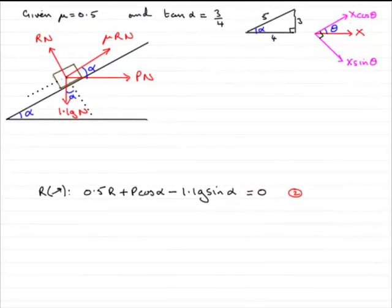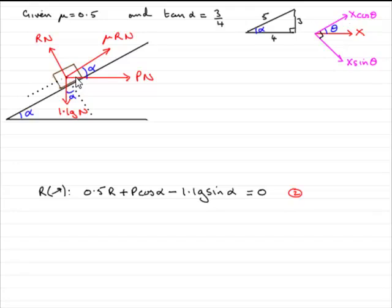In the last video I showed you how to find R and P by resolving perpendicular and up the plane, and it was quite long to find R and P. I did say there was a better method for this question — it's more of a one-off. I'm going to show you how you could do it slightly quicker.